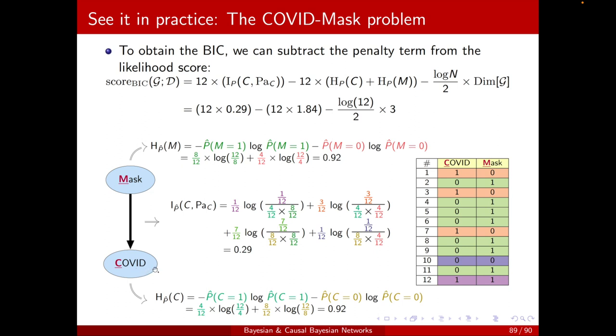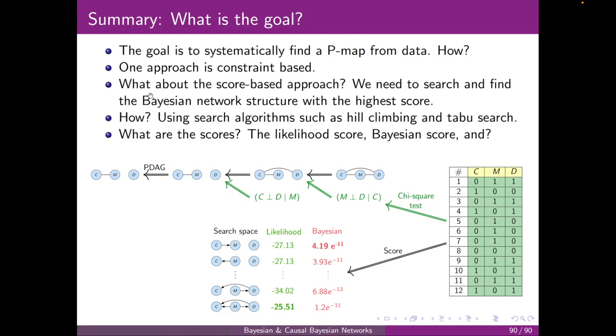For COVID, we have one parent, which is binary. Both of them are binary, so we just have two additional parameters here. So, total, it will be 3. And, by doing this, we will get this final value as our BIC score.